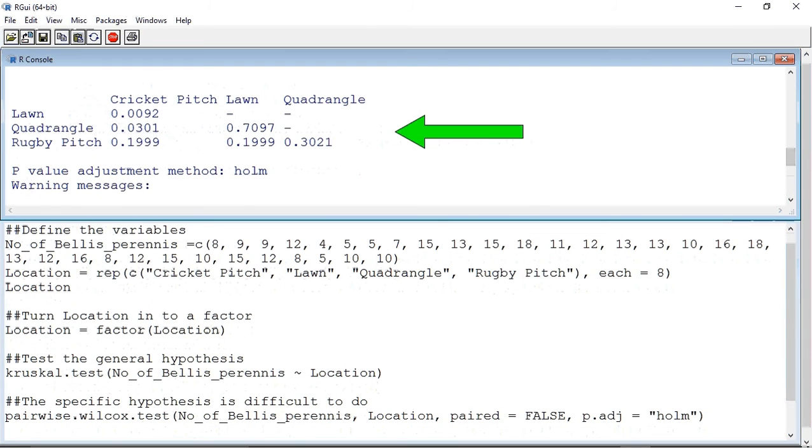We can see that we have a little table. The program has compared the lawn to the cricket pitch, the quadrangle to the cricket pitch, and all the other combinations.